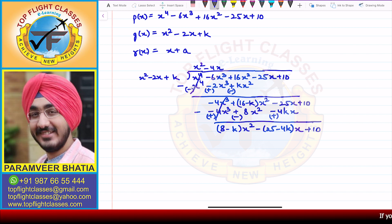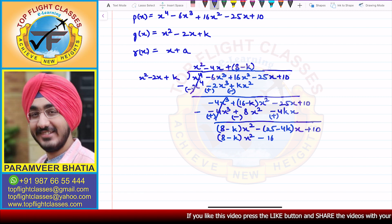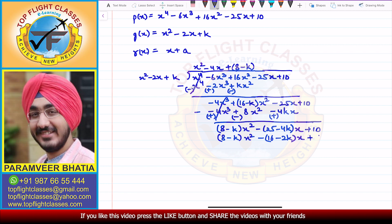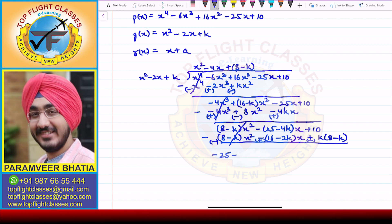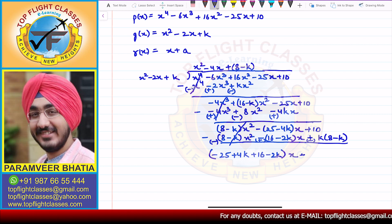To eliminate the x² term, the next quotient term is (8 minus k). So (8 minus k) multiplied by x² minus 2x plus k gives (8 minus k)x² minus 2(8 minus k)x, that is (16 minus 2k)x, plus k(8 minus k). When we subtract and change signs, the x² terms cancel. We get: minus 25 plus 4k plus 16 minus 2k times x, plus 10 minus k(8 minus k) as the remainder.